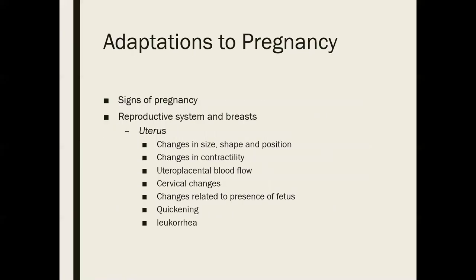Let's talk about adaptations to pregnancy. High levels of estrogen and progesterone have a big impact on many changes within the uterus. Early uterine enlargement results from that increase in vascularity and hypertrophy and hyperplasia — an increase in the amount of vasculature and growth in the vascular tissue itself. After the first trimester, uterine growth is primarily due to the mechanical pressure of the growing fetus, which expands the uterus.